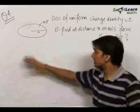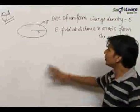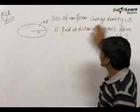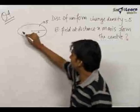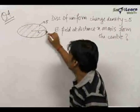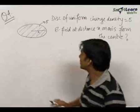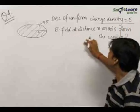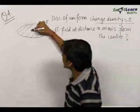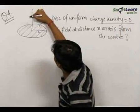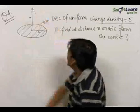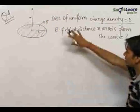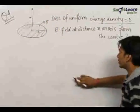We have an important question as a fourth question. We need to find out — we have a semicircular disc of uniform charge density sigma. We need to find out the electric field at a distance x on the axis. The electric field at this point due to this disc of uniform charge density sigma.